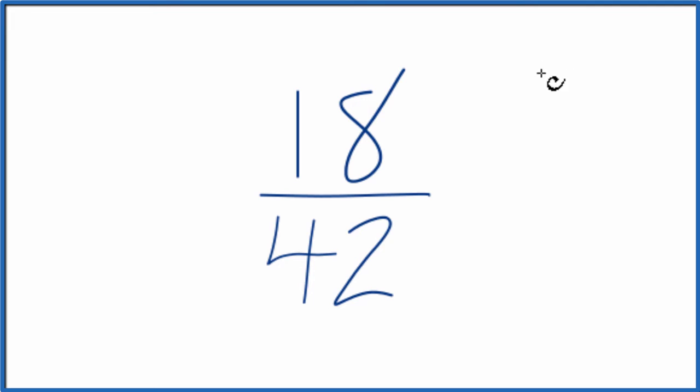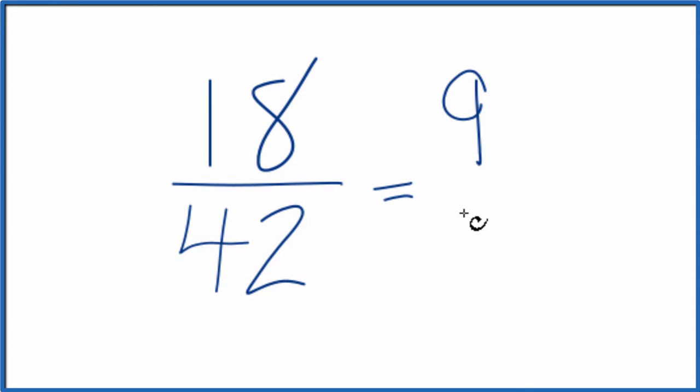You could write the factors for 18 and 42, but since both of these are even numbers I'm just going to divide both of them by 2. 18 divided by 2 is 9, and 42 divided by 2 is 21.